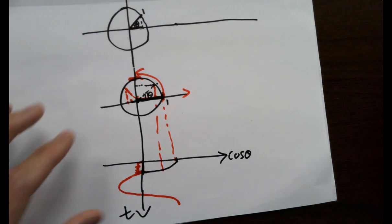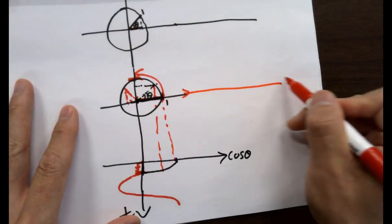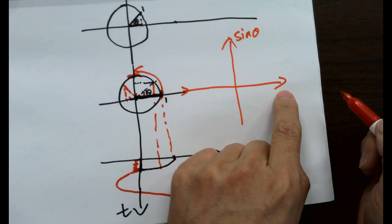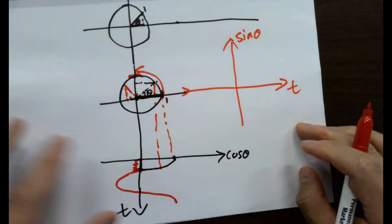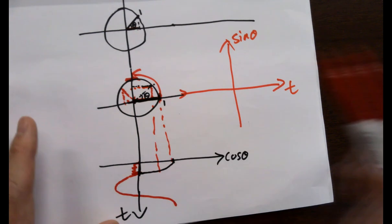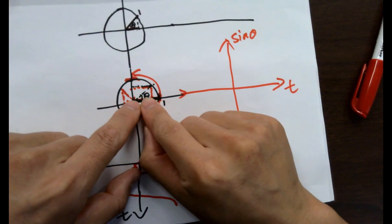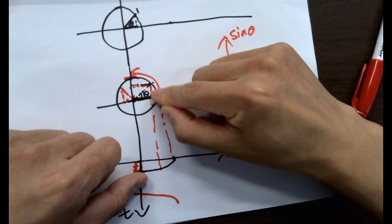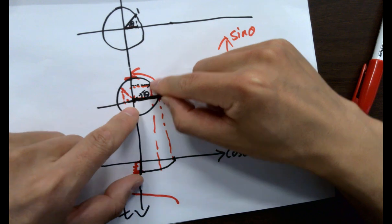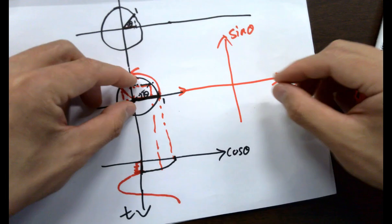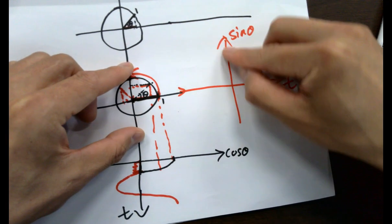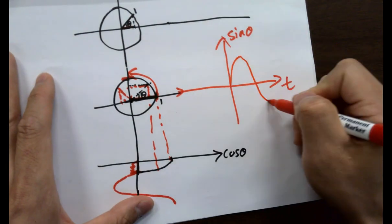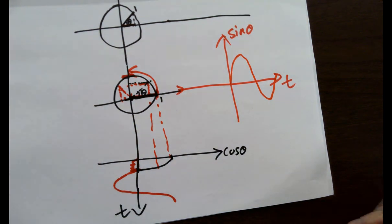What about the sine wave? It's just looking at the projection to the y-axis instead. Sine theta is the length projected to the y-axis — just an amplitude oscillating. Stretch it in the time domain and it becomes a sine wave.